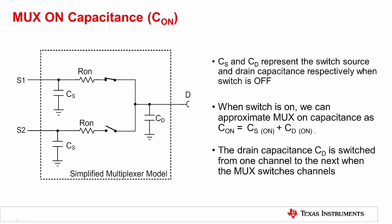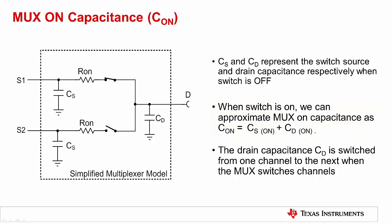This slide explains how MUX ON capacitance determines the settling and transient performance of the system. The figure illustrates a simplified model for a MUX. Each channel of the MUX can be modeled as a series combination of capacitors and resistors. CS and CD represent the switch source and drain capacitance respectively when the switch is off. R ON is again the ON resistance of the MUX. Typically, MUX drain capacitance is higher than source capacitance. When the switch is ON, we can approximate that the MUX ON capacitance, C ON, is equal to CS ON plus CD ON. Most MUX data sheets provide typical and maximum values for this capacitance, as well as capacitance versus source voltage. The drain capacitance CD is switched from one channel to the next when the MUX changes channels, and this capacitance needs to be recharged to the input voltage for the new channel. This transition determines the multiplexer's settling, which will be covered in detail on the next slide.